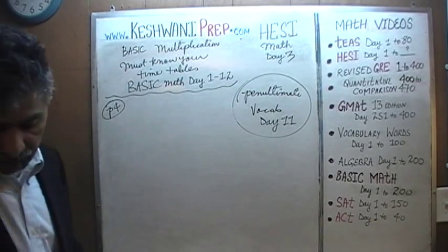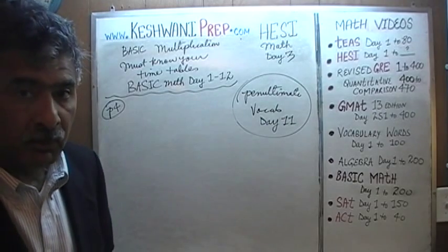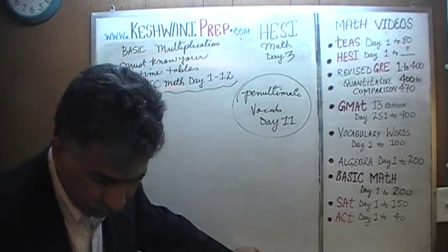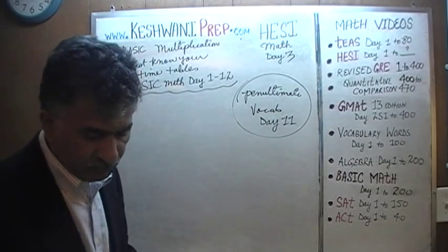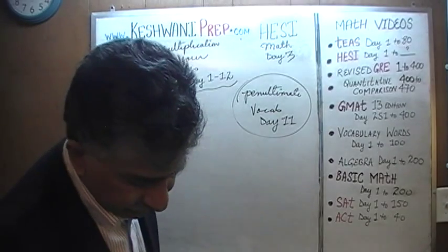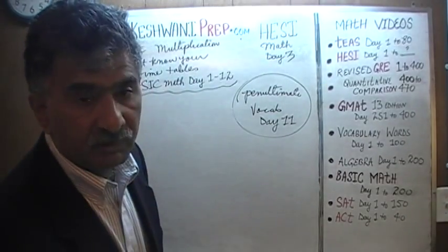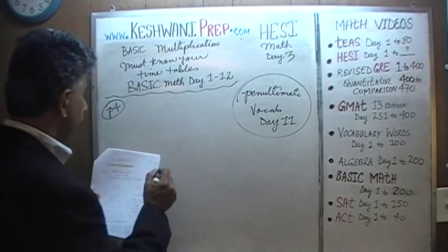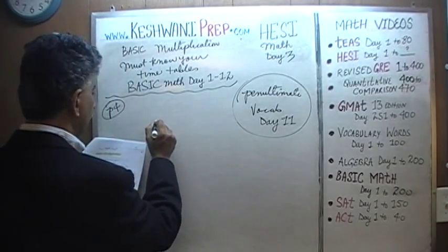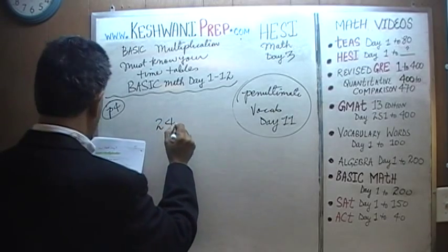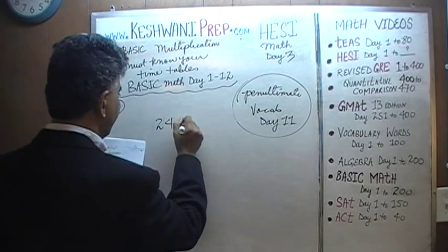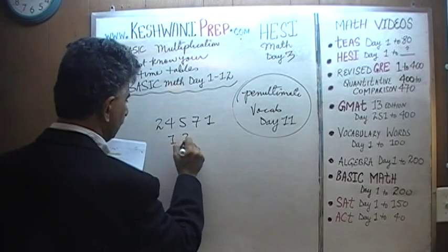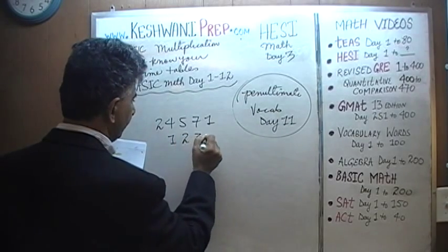You must know your timetables because that is what we are going to need for the problem we are about to solve. The problem given to us is found on page number 4 in the box there. It is quite conspicuously present. We are told: 24,571 times 1,233.